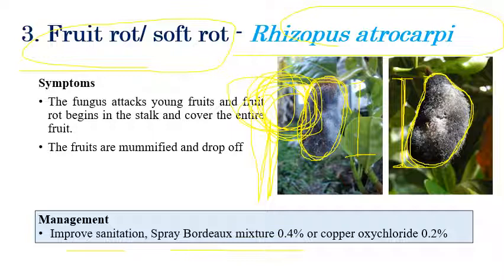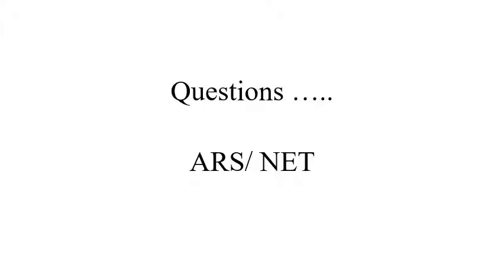For questions related to ASRB NET and other exams, the causal organisms are very important. Pink disease and Rhizopus atracarpi causing fruit rot are frequently asked in many exams. The causal organisms are the most important part to remember about jackfruit diseases. This concludes the topic of jackfruit diseases.